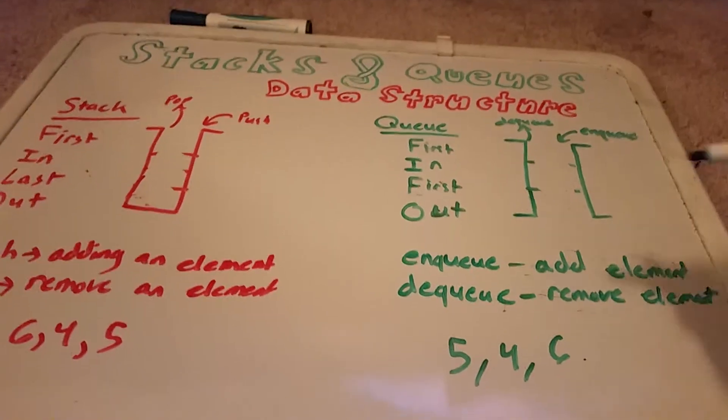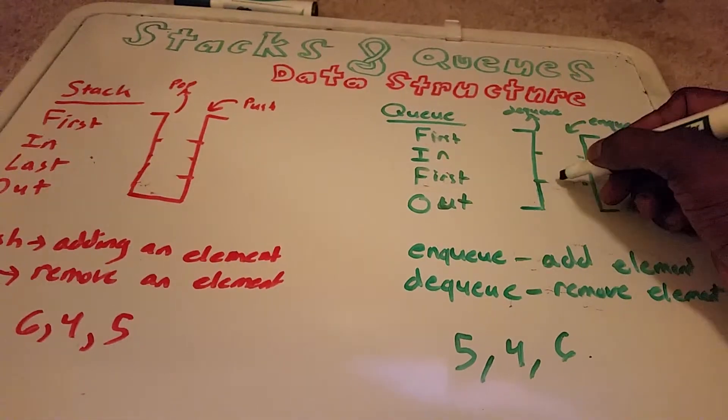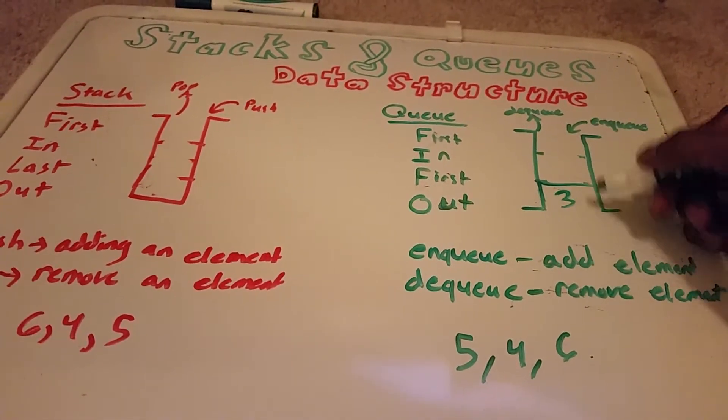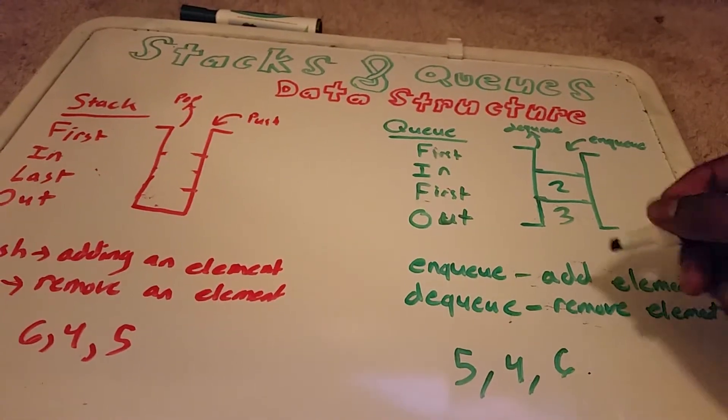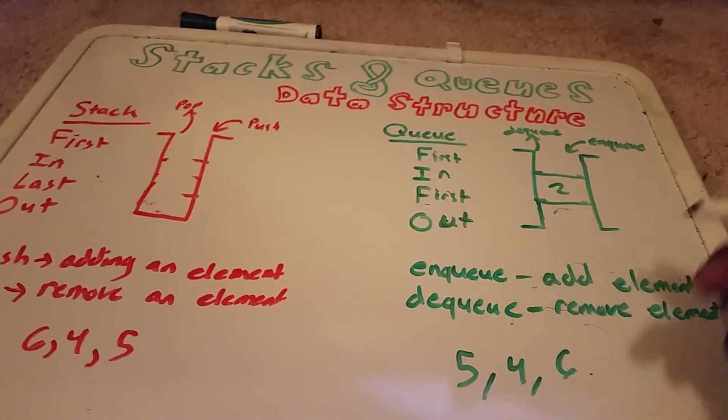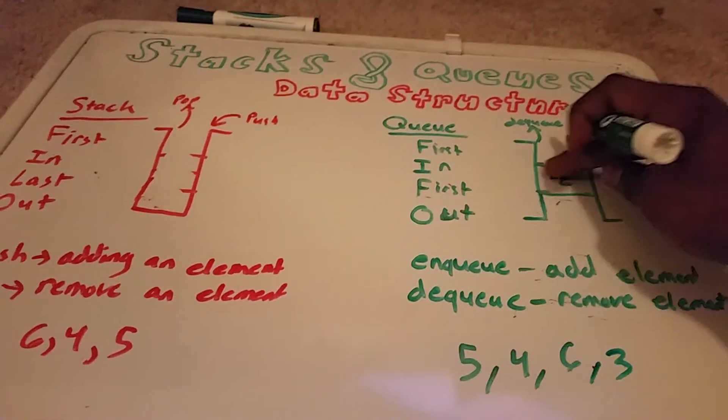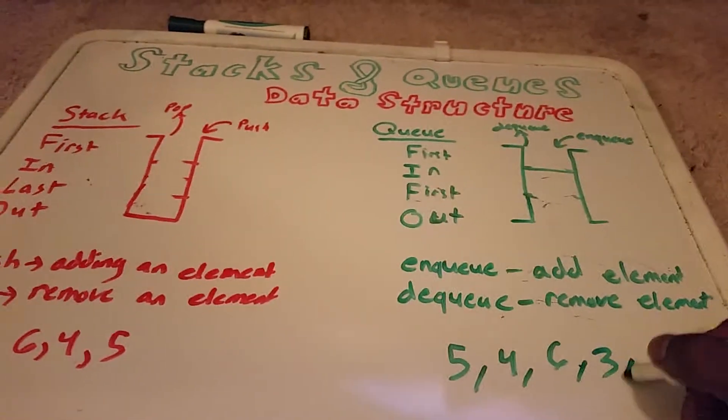And now let's say I enqueue. Let's say I want to enqueue the number 3. So now that goes down here. And let's say I enqueue the number 2. And now I want to dequeue, so I take it from this part here. Put down 3. I want to dequeue again and now I get 2.